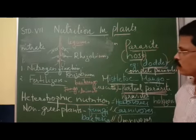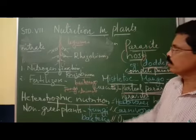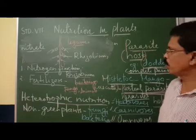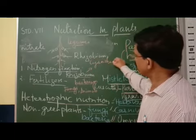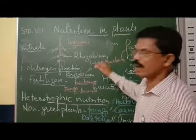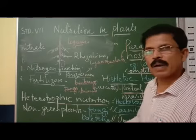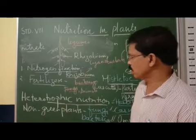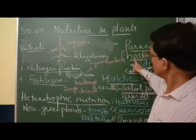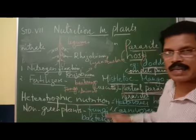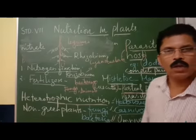So this is all about this chapter. We can understand that plants get nitrogen in two ways: through nitrogen fixation by rhizobium and also by cyanobacteria (blue-green algae), and through fertilizers. Plants get nitrogen from these two sources. Regarding heterotrophic nutrition, there are different types: saprotrophic nutrition, parasitic nutrition with complete and partial parasites, and animals which are categorized as herbivores, carnivores, and omnivores. That's all from this part. Thank you.